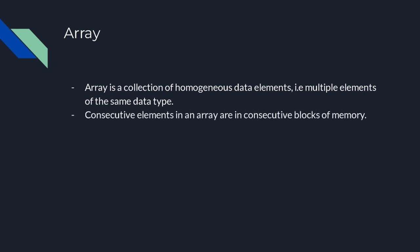Consecutive elements in an array are stored in consecutive blocks of memory, which allows you to perform pointer operations on them. Arrays can be static or dynamic, depending on whether memory is allocated statically or dynamically. Static allocation refers to C-style arrays or std::array, while dynamic refers to std::vector.